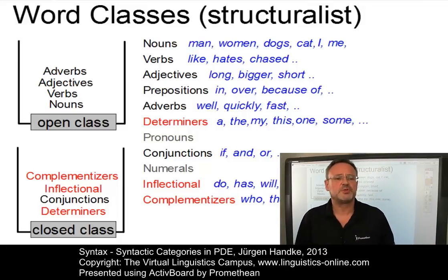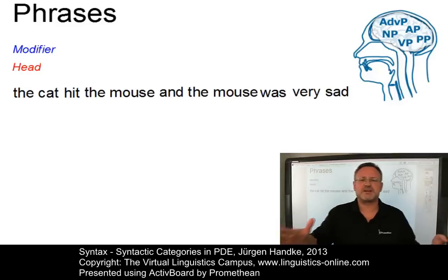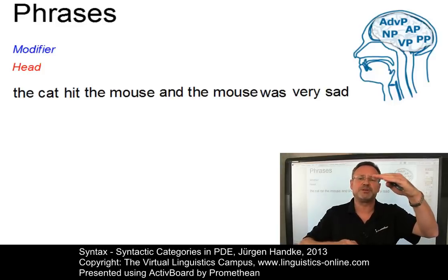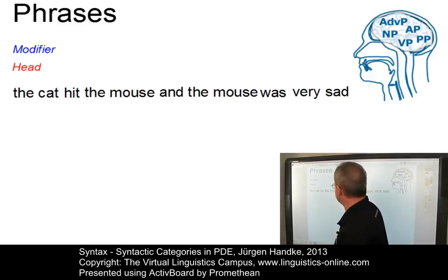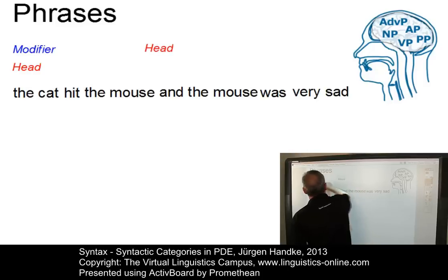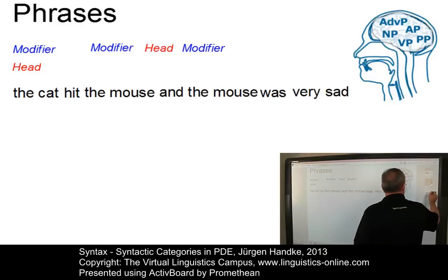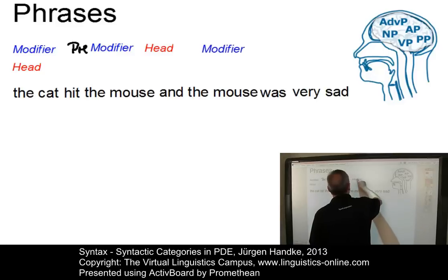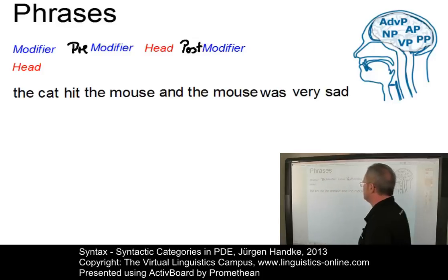Let's now turn our attention to phrases or phrasal categories. Phrases are syntactic units that consist of one or more words. They are intermediate constituents between words on the one hand and clauses and sentences on the other. Phrases consist of heads and modifiers. If a modifier stands in front of the head, it is called a pre-modifier. If it follows the head, it is referred to as a post-modifier. That's just some terminology.